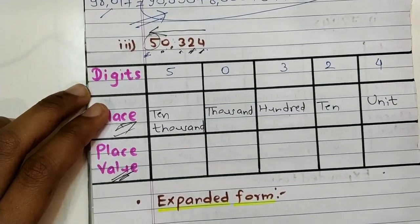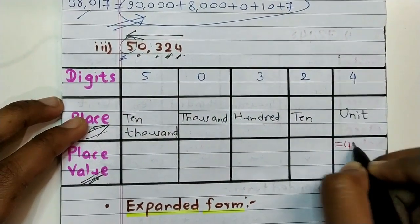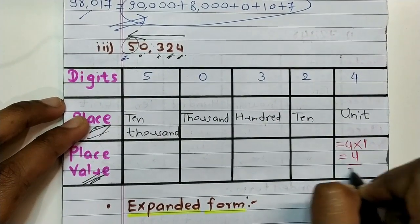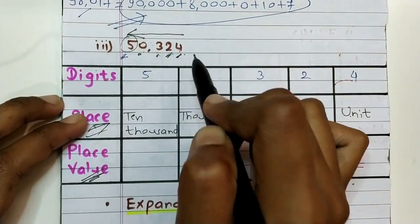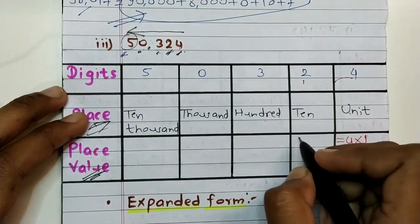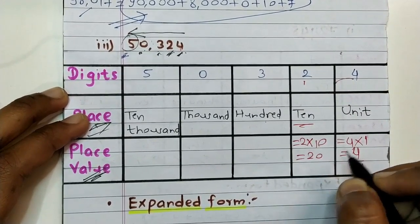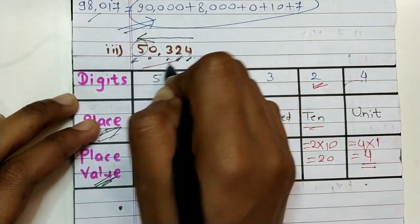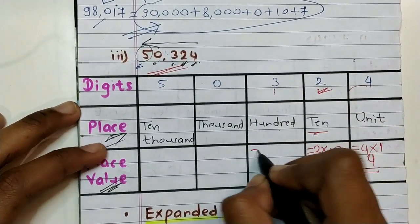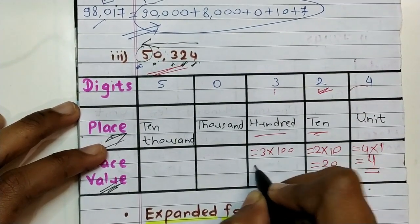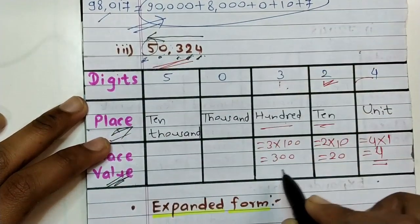Place of zero is thousands place, and lastly place of five is ten thousands place. Now we calculate all place values: four into one equals four, two into ten equals twenty, three into one hundred equals three hundred.